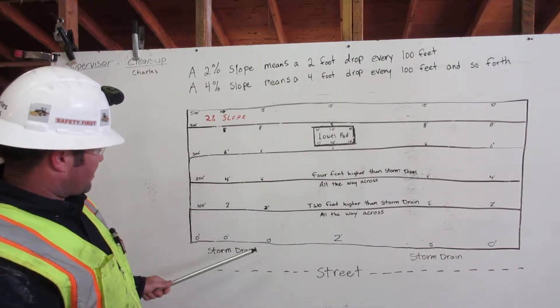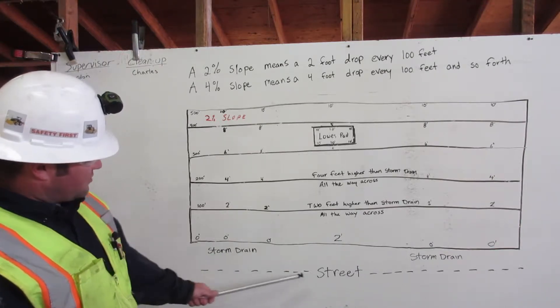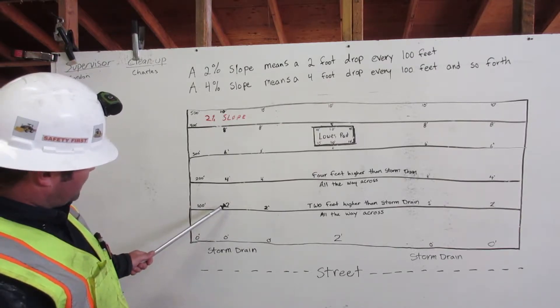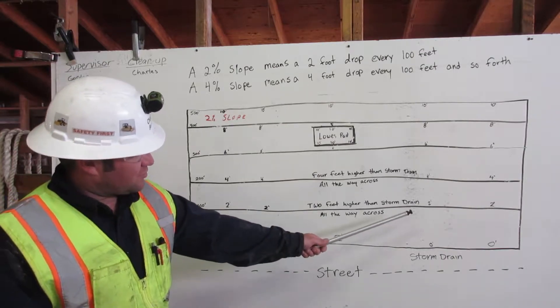So here we have our Lowe's parking lot. We have our storm drain and our street. So at 100 feet, we will be 2 feet higher all the way across than the storm drain.